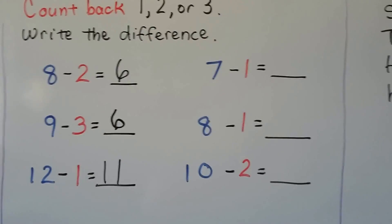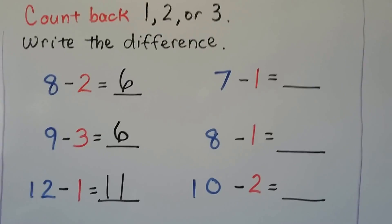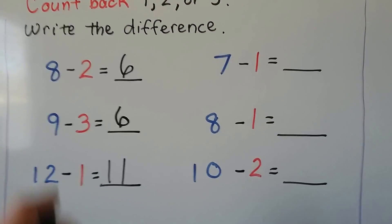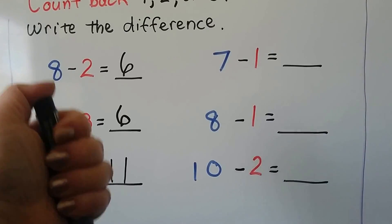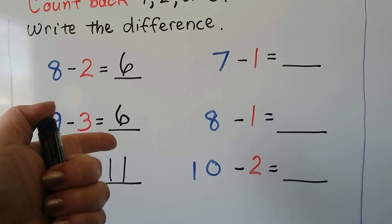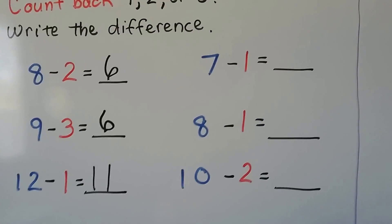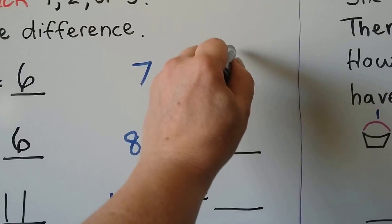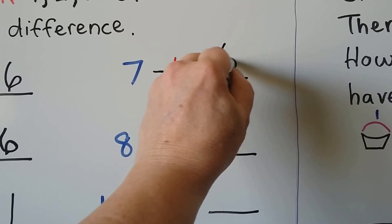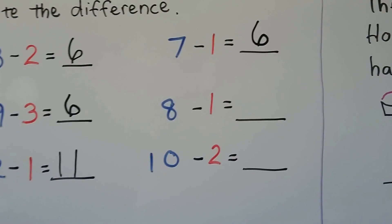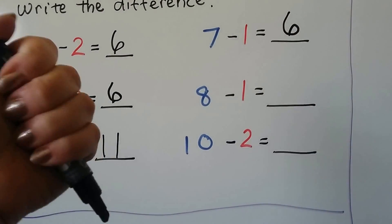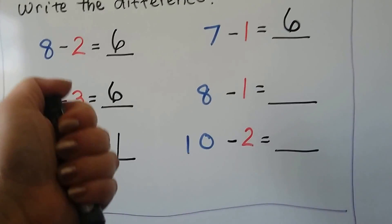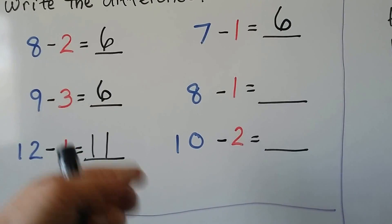12 minus 1: 12, 11. 7 minus 1 — we start with 7: 6. 8 minus 1: 8, 7.